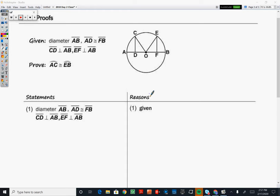So within this proof it says we have diameter AB, we have AD, so this segment congruent to segment FB. Let's mark those congruent.